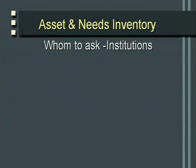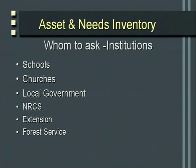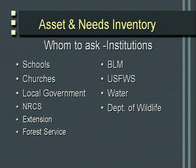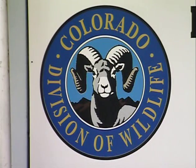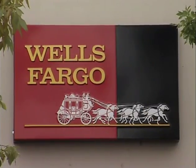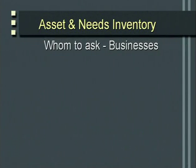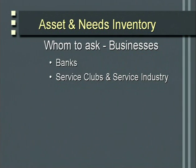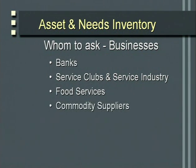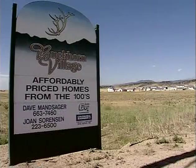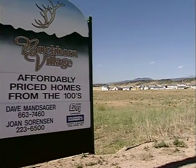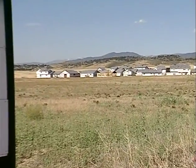Then there are institutions: schools, churches, local governments, NRCS, Extension, Forest Service, BLM, U.S. Fish and Wildlife Service, water organizations, wildlife organizations — anybody in government or the private sector would be useful. Think about the businesses — in most cases, the business community exists because of the natural or human-altered resources we're working with. Engage the banks, service clubs and organizations, service industries, food services, commodity workers, and don't forget the real estate folks who are helping to modify the focus of the land.